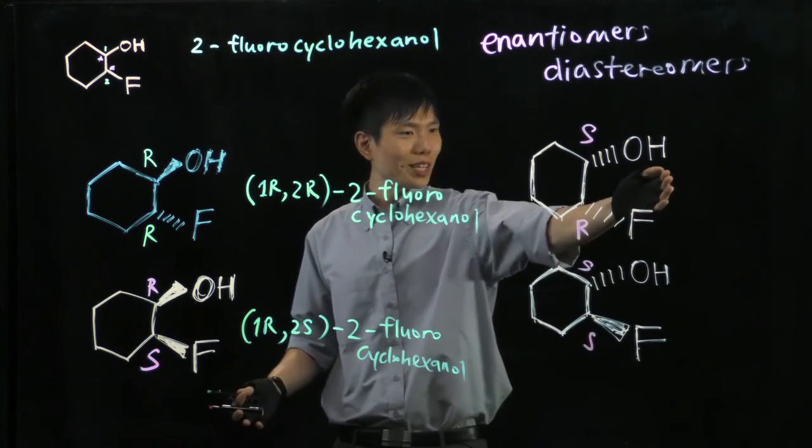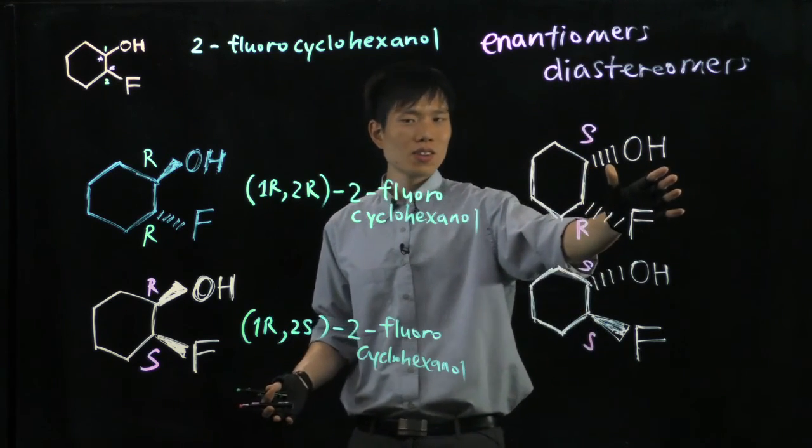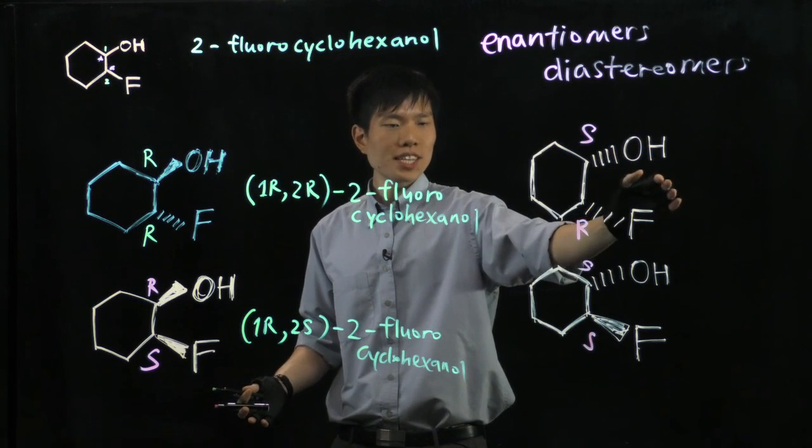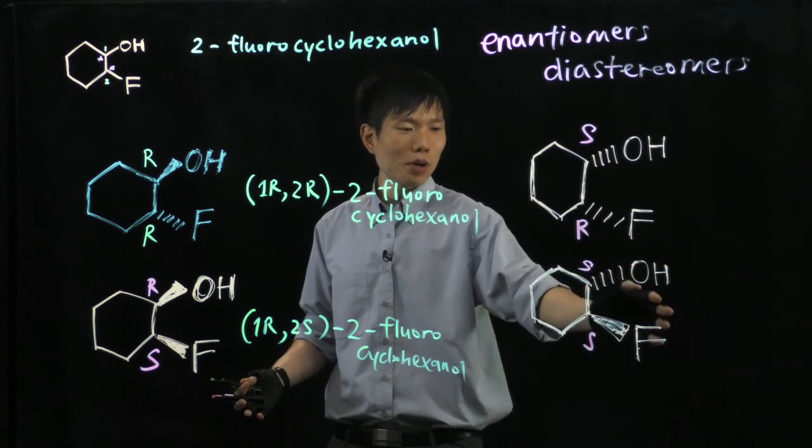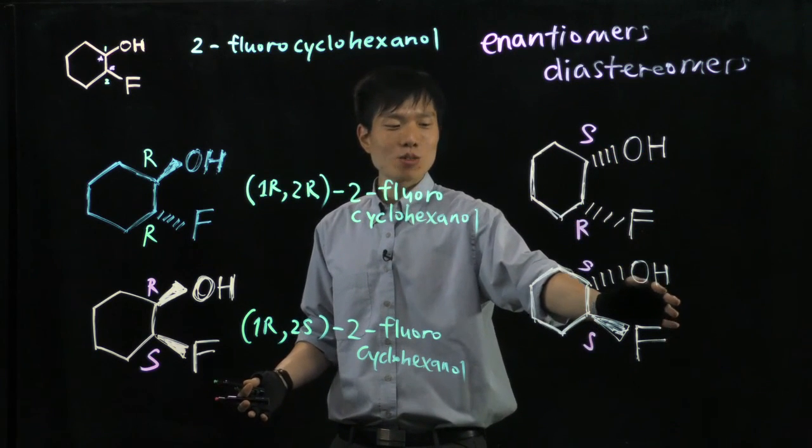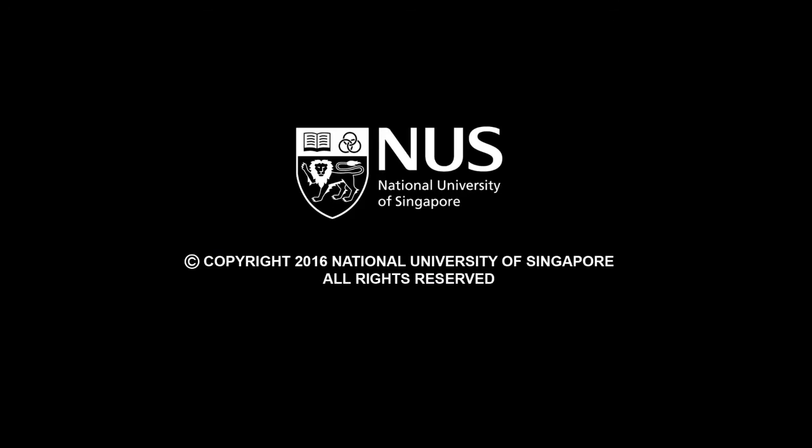So you should know how to name this molecule. This will be known as 1S, 2R, 2-fluorocyclohexanol. And for the bottom molecule, it will be known as 1S, 2S, 2-fluorocyclohexanol.